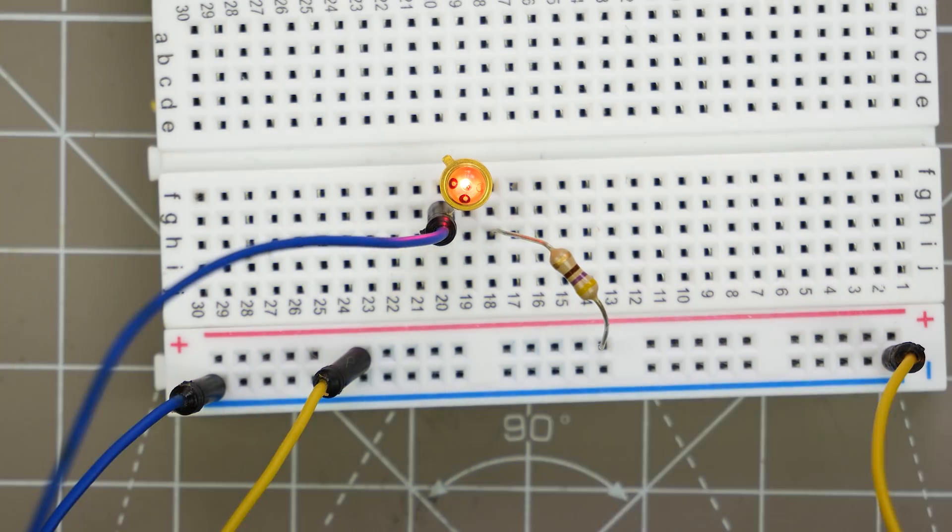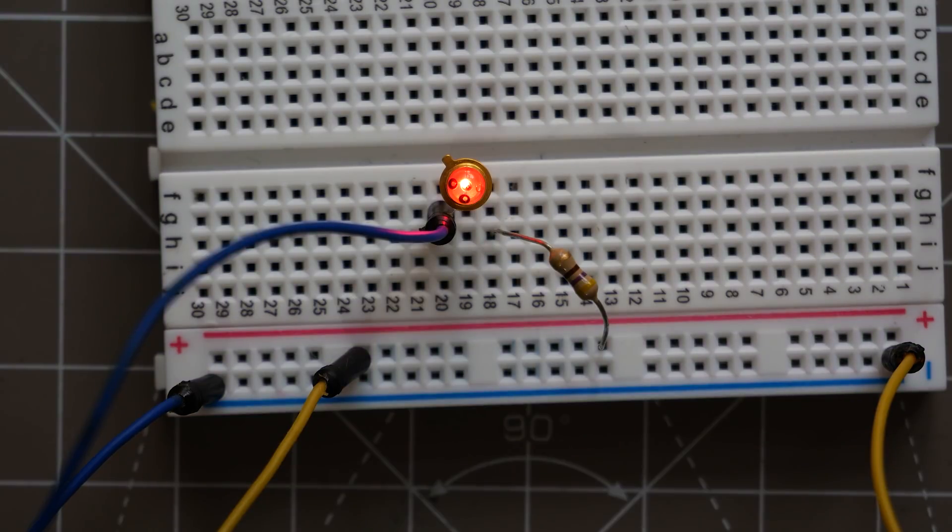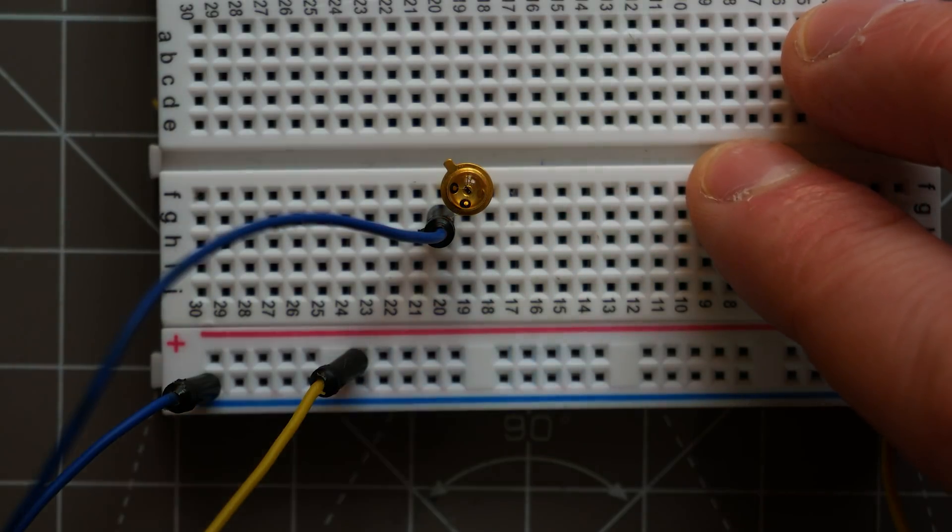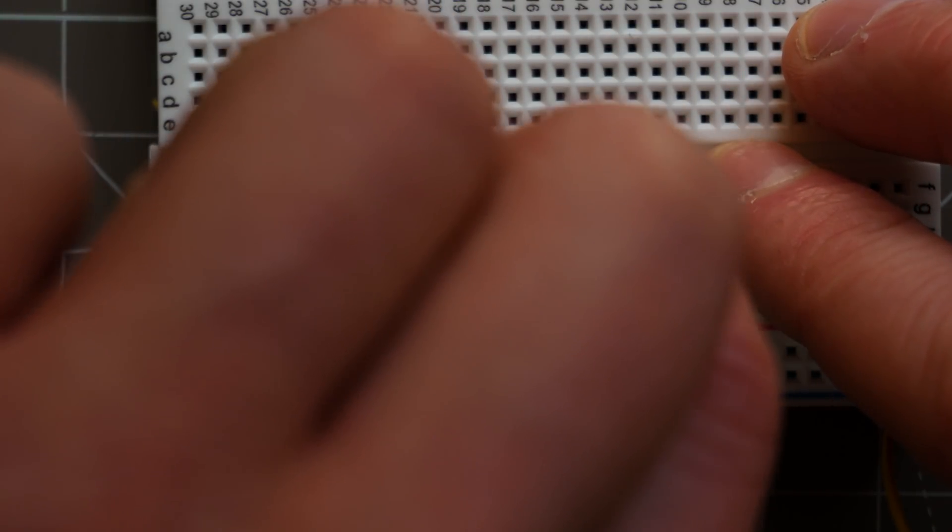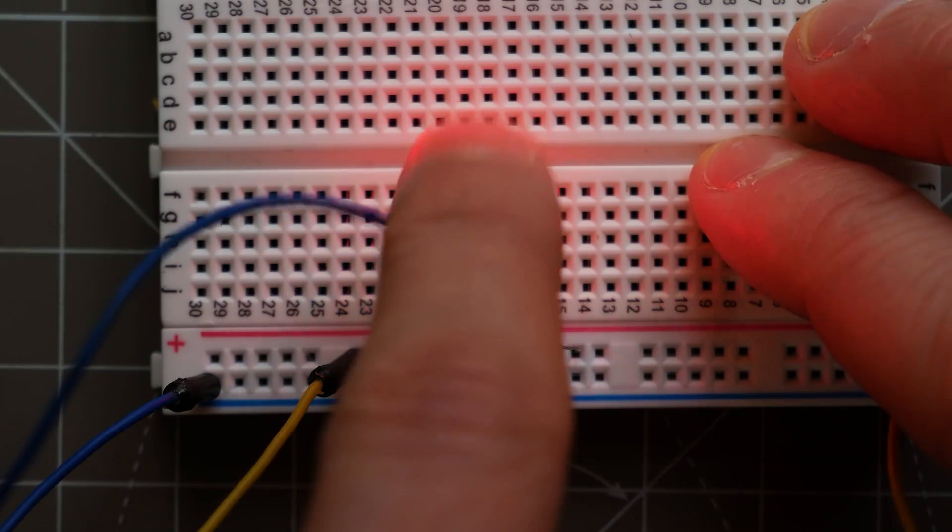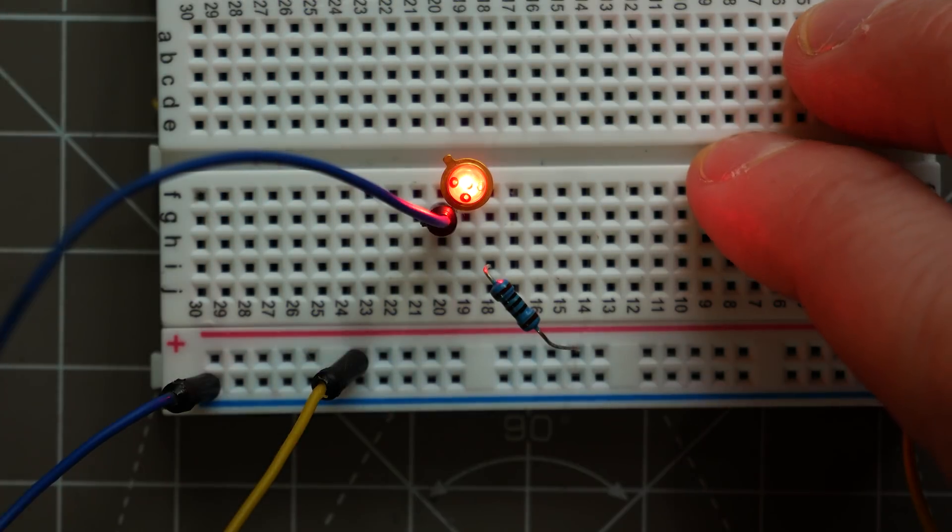So it's quite dim. Let me turn the lights off so you can have a little closer look. It's fairly dim. It's drawing 4 milliamps. Shall I switch it out for a 100 ohm resistor? That's a bit brighter, but it's still drawing, it's drawing 26 milliamps.